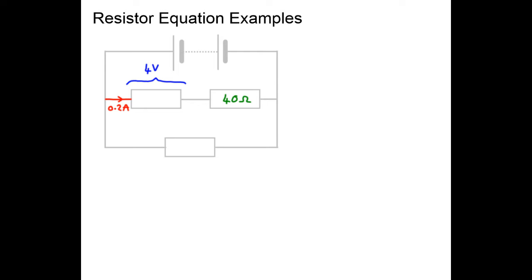In this video we're going to look at using the resistor equation, and we know that the resistor equation is R for resistance equals V for voltage divided by I for current. We're going to build a circuit to look at it with. I've drawn my circuit in light gray so that I can start to fill it in.